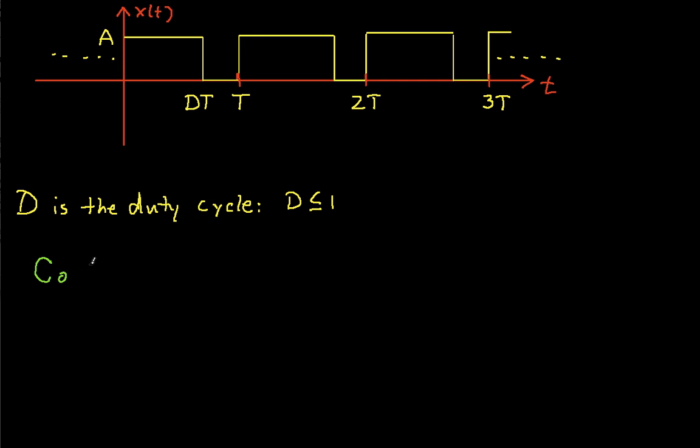First we have C0, which is the DC component. This is 1 over T, the integral from 0 to T of X(T) dT. And if we work this out,